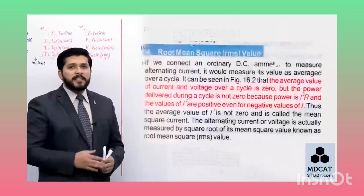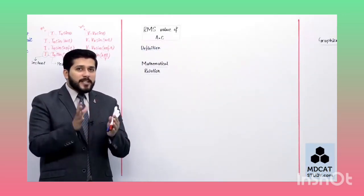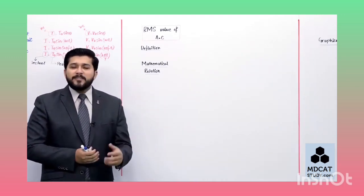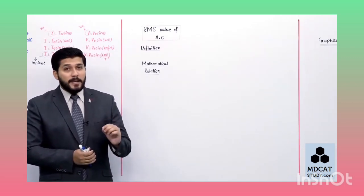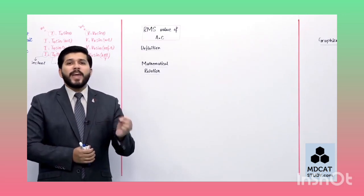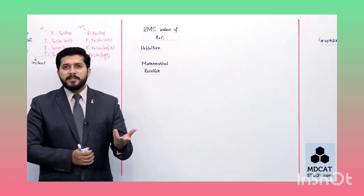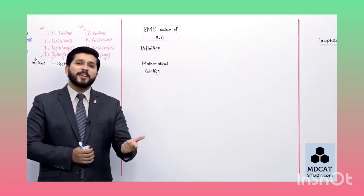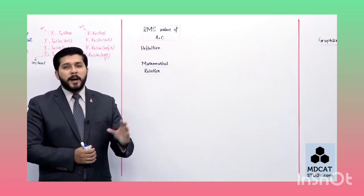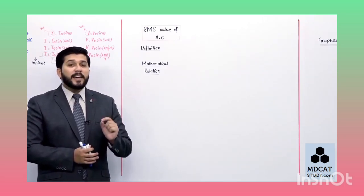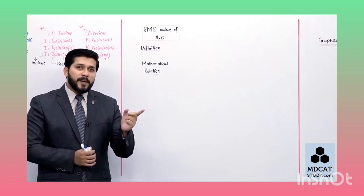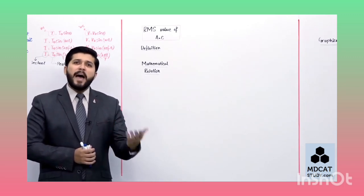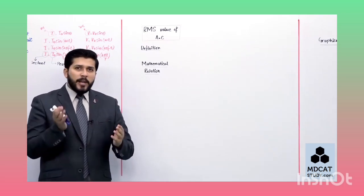جب میں square والی بات average نکالنے کے لیے use کروں گا تو square آ جائے گا، negative values positive ہو جائیں گی، اور پھر average value of AC بھی find out کر سکتے ہیں۔ RMS value کو آپ average کی replacement سمجھ لیں - یہ exact average نہیں ہے، لیکن جب average value of AC پوچھیں تو rms نہیں بولیں گے - average value of AC zero ہوتی ہے۔ RMS value average کا equivalent ہے۔